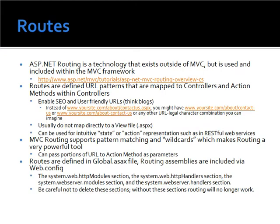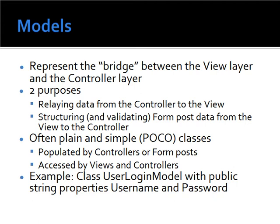Models represent the bridge between the view layer and the controller layer. The two purposes they serve are to relay data from the controller to the view, and also to structure and validate form post data from the view back to the controller. So the typical MVC pattern works in that your controller does your business logic and creates a model — a POCO, a plain old C# object — which you populate. The controller then passes that model to the view.